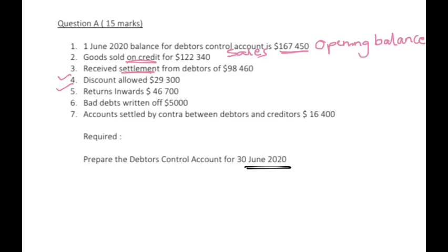Returns inwards: this is when the customer, debtor, or client returns goods to us. Maybe it didn't fit well or it's not what they expected, but they will return the goods back to us. This will decrease our debtors account.